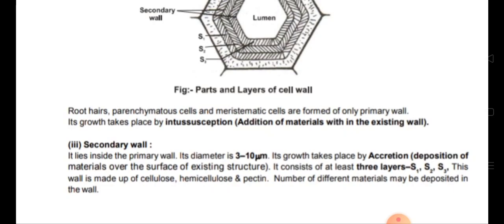Primary wall growth takes place by intussusception — that is, addition of materials within the existing wall. Materials are added from the cell cytoplasm; waste materials of the cell organelles get deposited and these walls are formed.